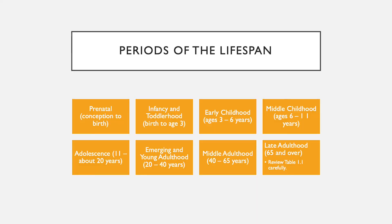The course will progress through the periods of the lifespan, which we recognize as being socially constructed, meaning they are not objectively defined. There is no specific period of time when a person moves from being an adolescent to an adult, or an adult to late adulthood. It is defined by society and may be different in other cultures.